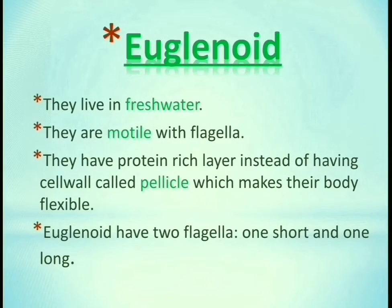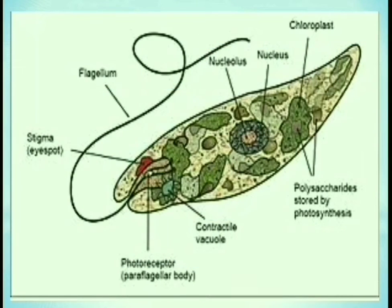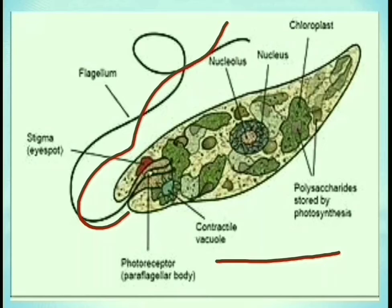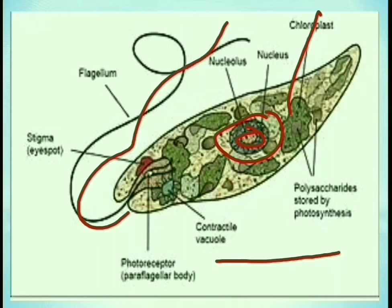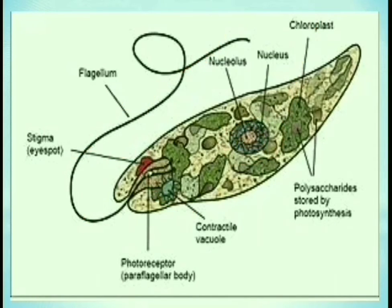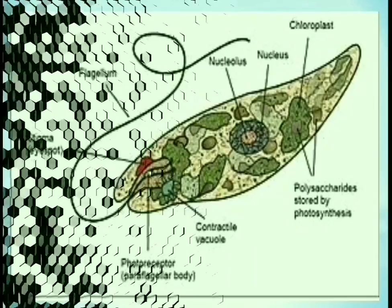Euglenoids have two flagella — one short and one long. Here we have shown the euglenoids with a long flagella and a short flagella. They have a nucleolus and nucleus surrounded by a nuclear envelope, chloroplasts, contractile vacuole, flagella, and a stigma, so they can show the characteristics of plants.